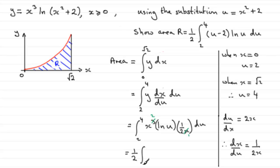So, what I have now is this half, which can come out the front of the integral. I've got the integral going from 2 to 4. And now I have just got X squared. But what is X squared? Well, from here, X squared equals u minus 2. So I can pop that in as u minus 2 for X squared. Then we've got the natural log of u integrated with respect to u. And that's what we had to prove, right?